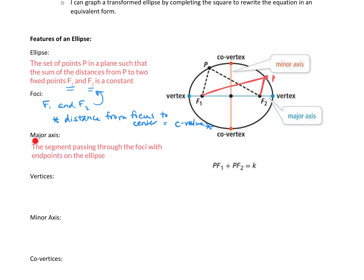Alright, next we have the major axis. That's going to be the segment that passes through the foci with endpoints on the ellipse. So here's your foci. We can see from here to here with endpoints on the ellipse. This is what we call the major axis. So vertices, those are going to be the endpoints of the major axis. Vertices or each vertex will be on the ellipse. Those are the endpoints of the major axis that passes through the foci.